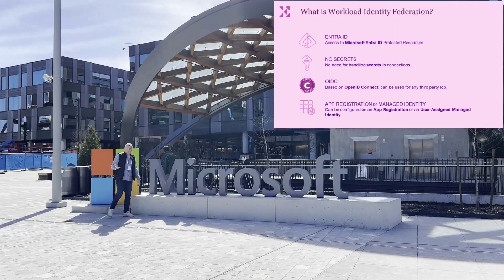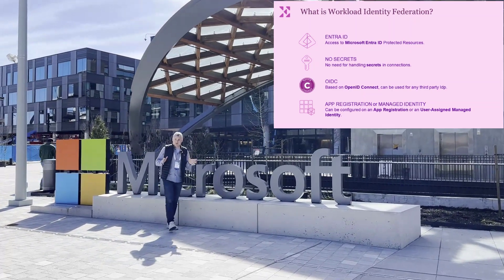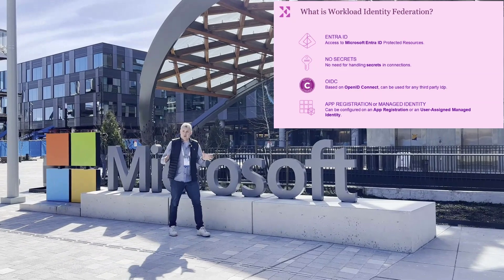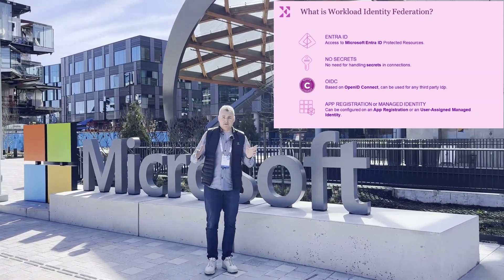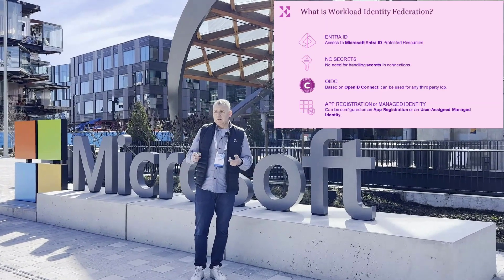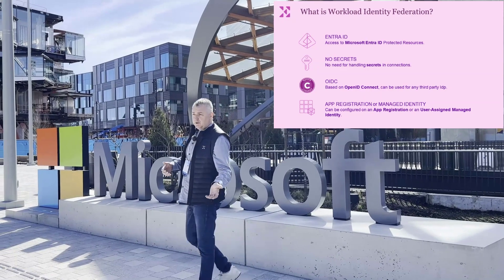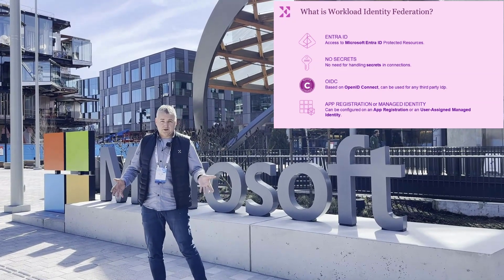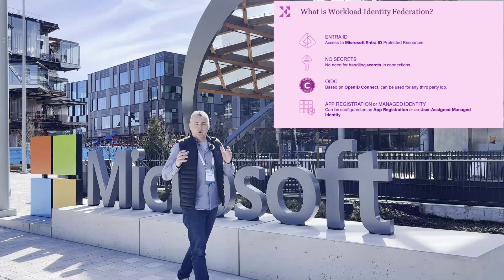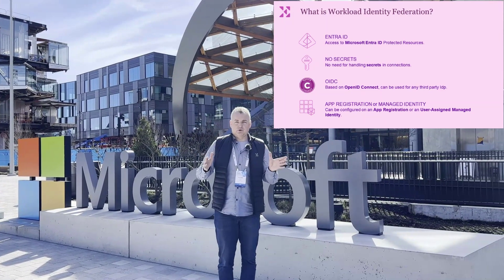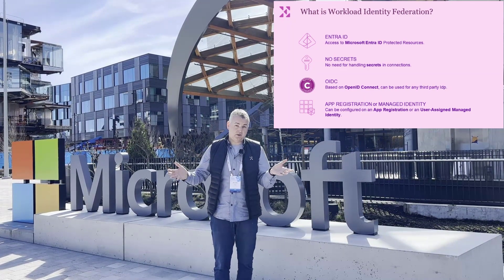So what is Workload Identity Federation? It's a way that you can access Microsoft protected resources from third-party services like GitHub. You can use Azure DevOps and you don't have to manage secrets. The way that it works is that you create an app registration or use a user-assigned managed identity, and then you set up a connection via OpenID Connect to let those resources be accessed by, for example, a pipeline in Azure DevOps.